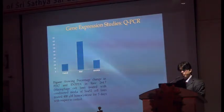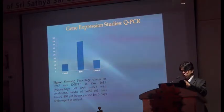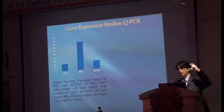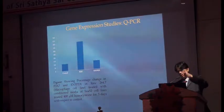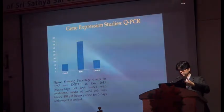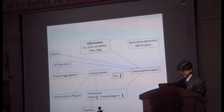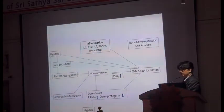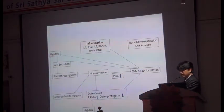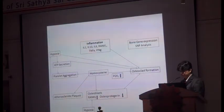We then went on to gene expression studies. P2X7 was 3.5 times expressed in all these patients. We are still working on the hypoxia mechanism, platelet aggregation, and further gene expression analysis. We have found five single nucleotide polymorphisms (SNPs) which are significant to AVN, but we need to corroborate that with a larger population to understand what they truly mean.